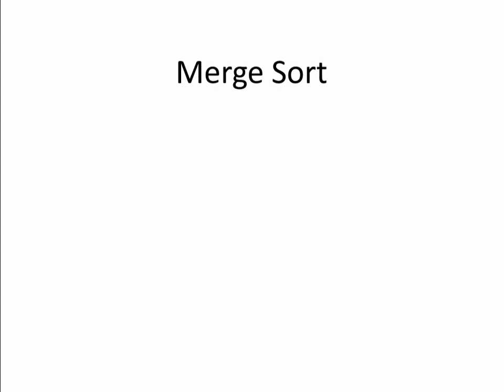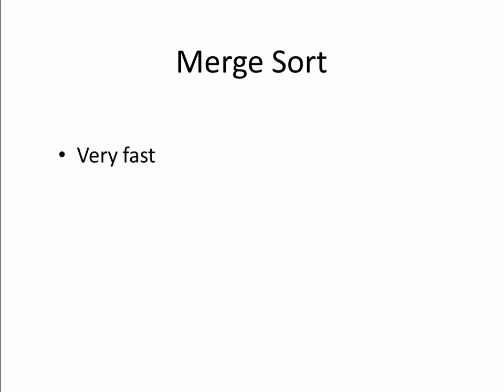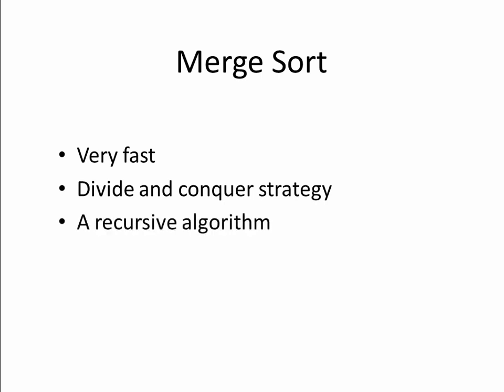The Merge Sort is a way of sorting an unordered list. It was invented by the great John von Neumann, and it has the following characteristics. It's very fast. It employs a divide-and-conquer strategy, and the best way to implement a Merge Sort is to use a recursive program.